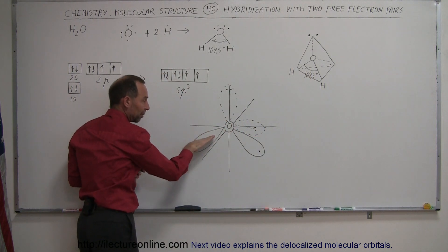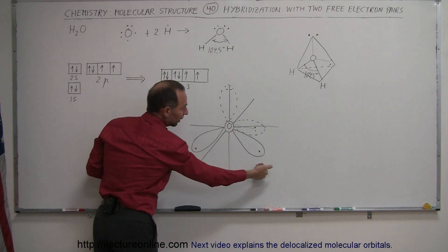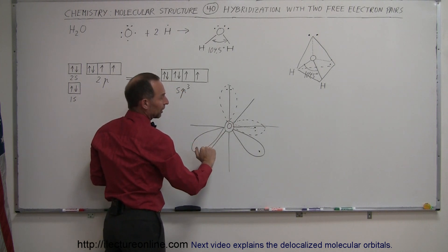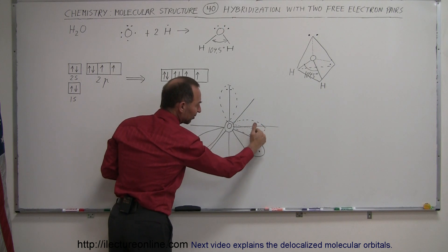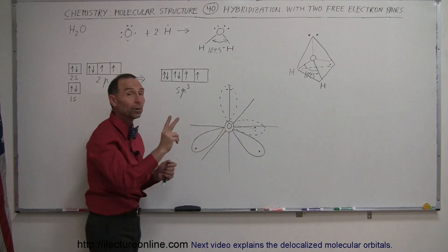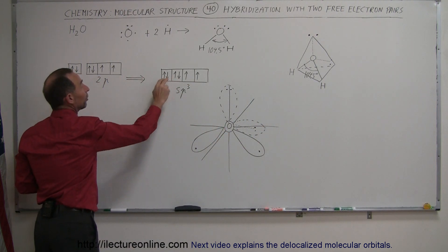One coming out in this direction, slightly above the xy plane. One coming out in this direction, slightly below the xy plane. And then we have a third orbital, which is shaped the same as these other two orbitals, but with two electrons in them. And therefore, there will be no bonding taking place with this orbital.